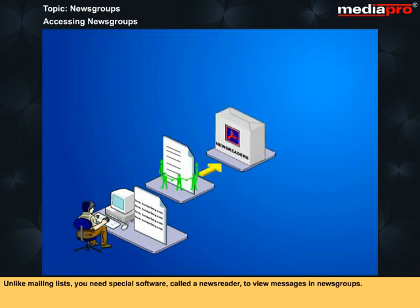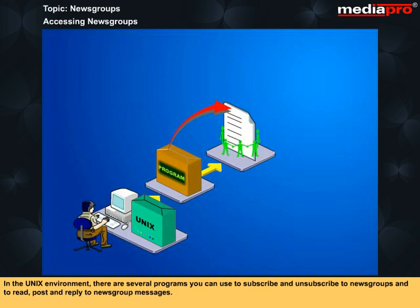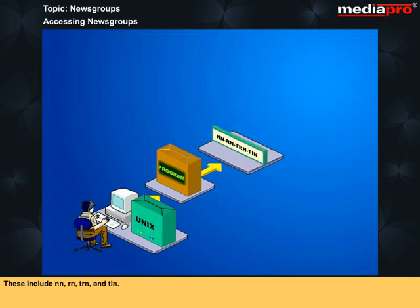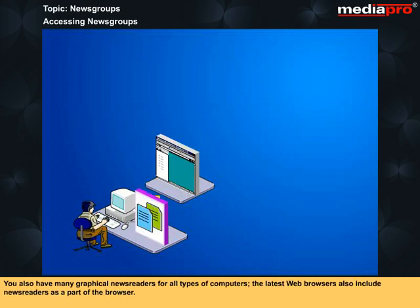Unlike mailing lists, you need special software called a news reader to view messages in newsgroups. In the Unix environment, there are several programs you can use to subscribe and unsubscribe to newsgroups and to read, post and reply to newsgroup messages. These include NN, RN, TRN and TIN. You also have many graphic news readers for all types of computers. The latest web browsers also include news readers as a part of the browser.